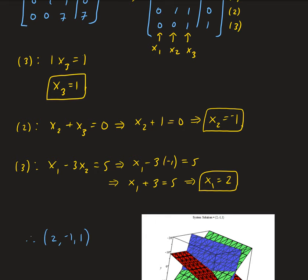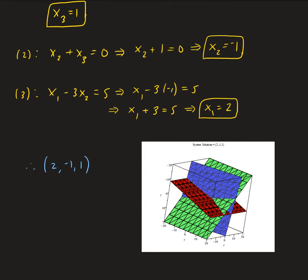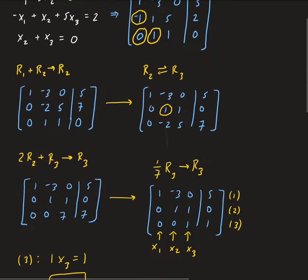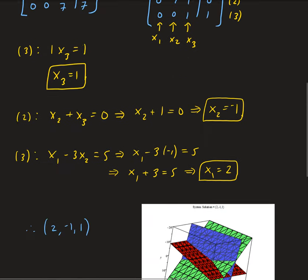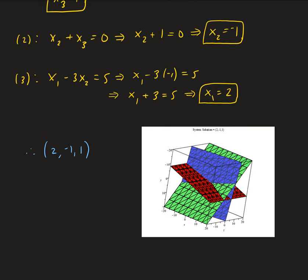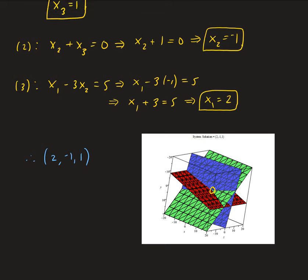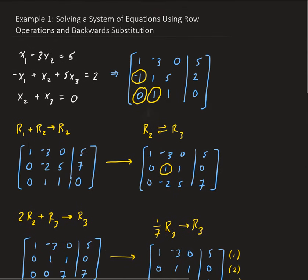That is our solution. Looking at this figure, each of the original equations represents a plane, and you can see that the intersection of all three planes occurs at the point 2, minus 1, and 1. This system is consistent and has a unique solution.